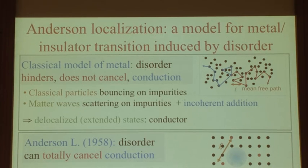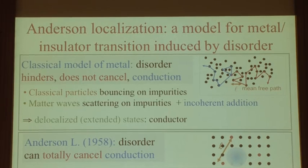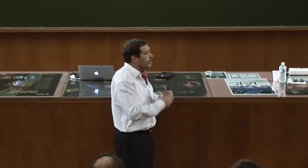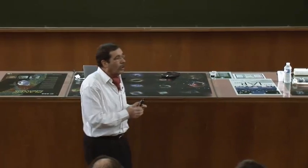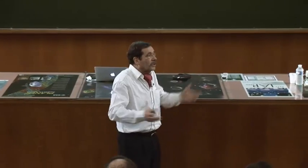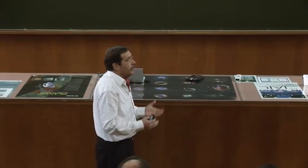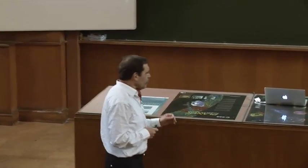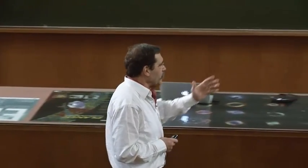Or, il y a des cas observés par les expérimentateurs de la matière condensée, dans des systèmes parfaits à basse température, où d'un seul coup la conductivité tombe exactement à zéro. Vous avez une progression continue : vous augmentez le taux d'impuretés, ça diminue, ça diminue, mais ça ne va pas à zéro. Et donc, en 1958, Anderson propose un modèle — j'ai lu cet article des dizaines de fois, je commence à peine à le comprendre.